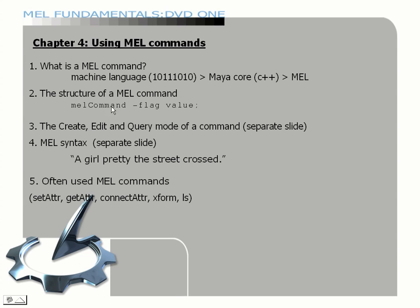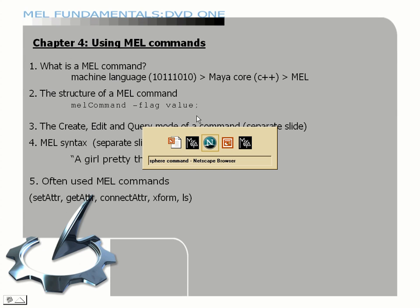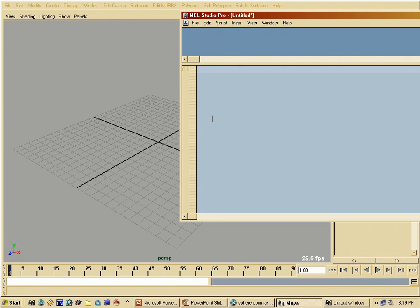The structure of a MEL command is as follows: you have the MEL command, you have your flags, and then you have a value. In this example, there is no MEL command called 'MEL command' — this is just an example. You can have a lot of flags with each MEL command, and then you have different kinds of values. Let's jump to Maya and take a look at that.